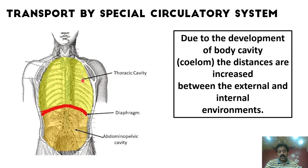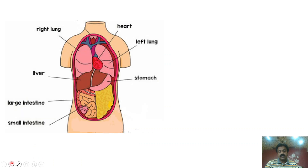Some organs will be found in our thoracic cavity and some organs will be found in our abdominal cavity, and the distance between them increases. For example, our left lung and right lung are found in the thoracic cavity, and our heart is also found in the thoracic cavity.